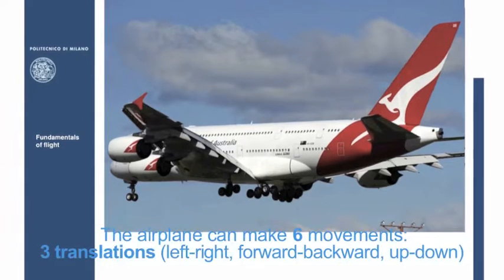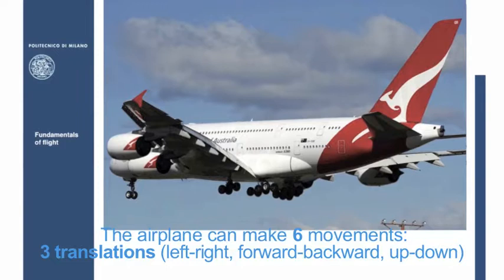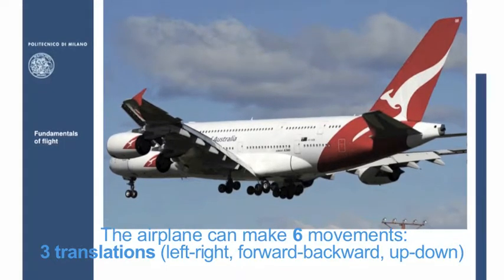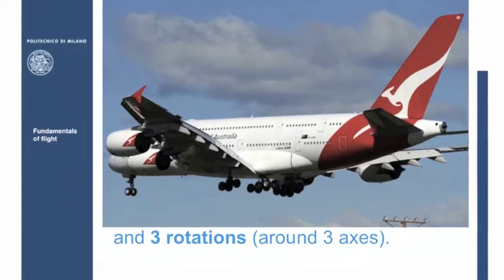The airplane can make six movements: three translations, left, right, forward, backward, up, down, and three rotations around the three axes.